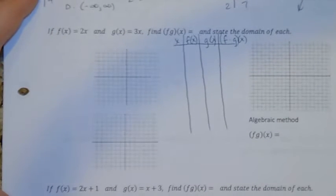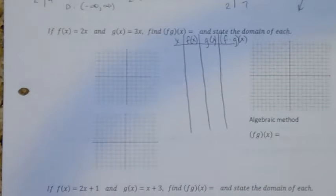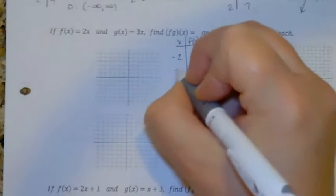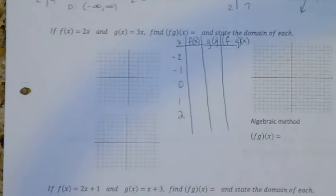Alright, let's start with the domain, same as before. Let's choose negative 2, negative 1, 0, 1, and 2. We don't have to choose those numbers. I just chose them because it'll be easy to see them on the graph because they're close to the y-axis.